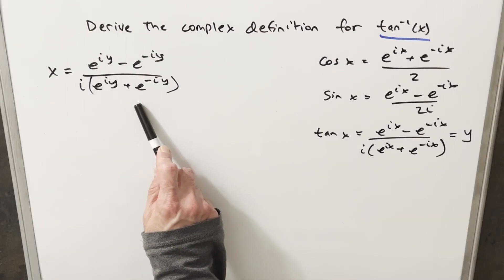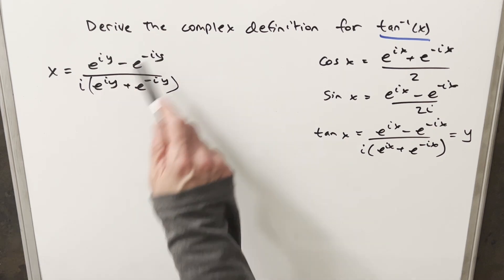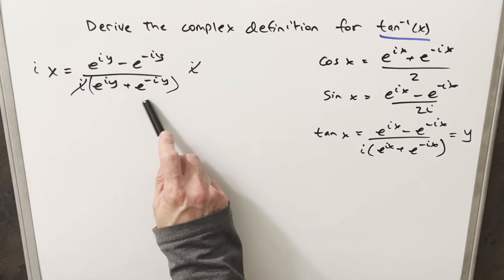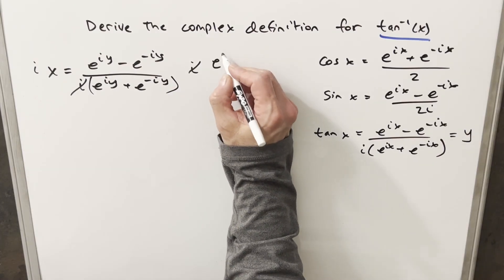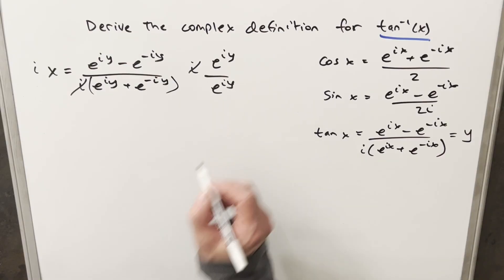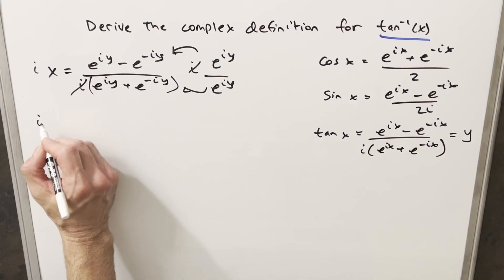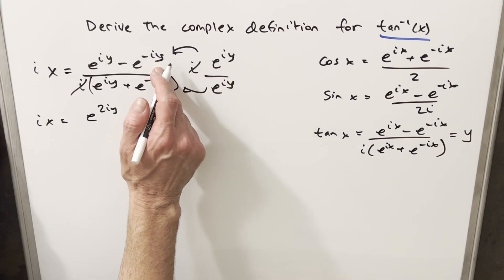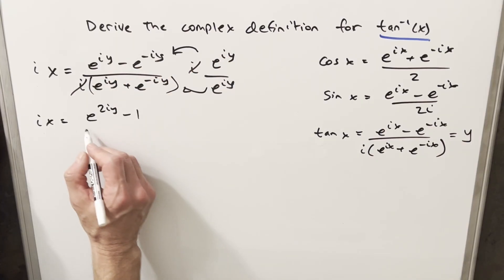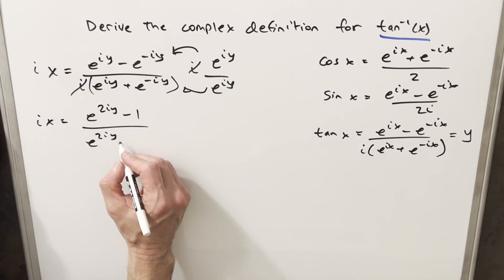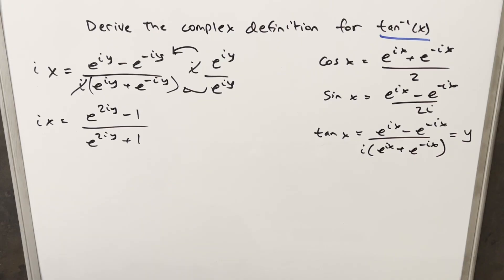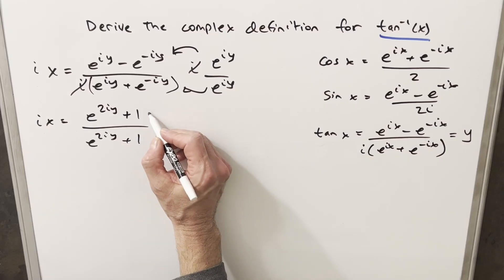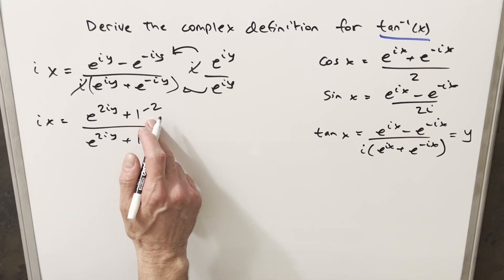Working with this equation, we need to do a whole bunch of algebra to isolate our y when we have it in four different terms. For my first step, I'm going to multiply by i on both sides just to cancel that off. Then I don't really like having y in four terms, but I can make progress by multiplying by e^(iy) over e^(iy). Distributing in the numerator and denominator, we'll have ix on the left side. This becomes e^(2iy), and when you multiply e^(iy) times e^(-iy) this becomes e^0, or just 1. Similarly in the denominator, we have e^(2iy) plus 1. But I want to get this down to just one y term, so I can rewrite the minus as a plus and subtract 2 so we still have minus 1.